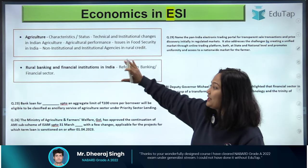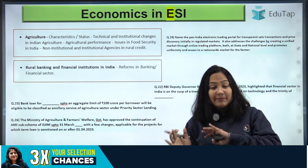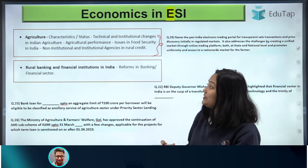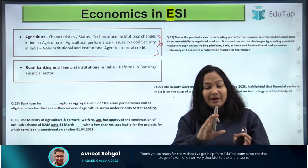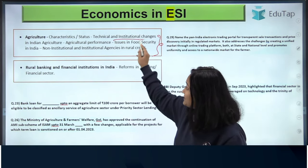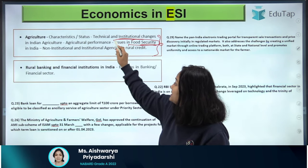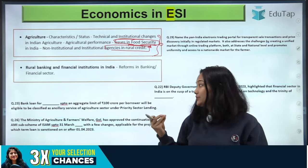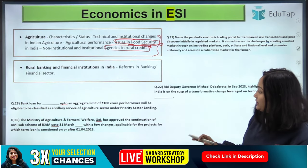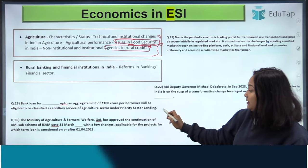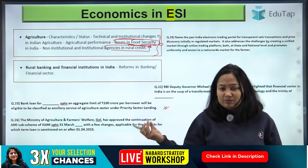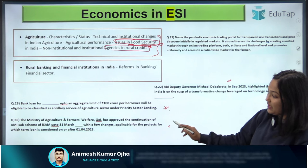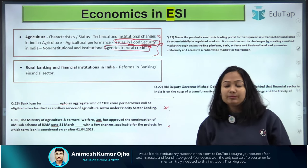Coming to the next topics: Agriculture and Rural Banking & Financial Institutions. Under agriculture, you will have to cover all the listed topics. Some topics are more focused — for example, institutional changes and issues in food security are very important. Agencies involved in rural credit are also very important, and you can see related questions from the exam. In year 2023, questions were asked related to agriculture — all kinds of general agricultural issues, credit-related questions, and reports related to agriculture — all very important.